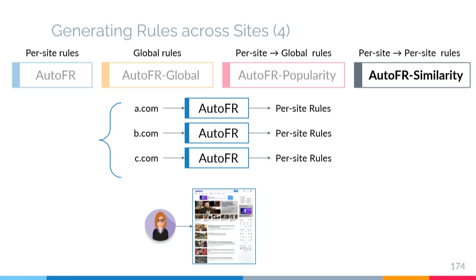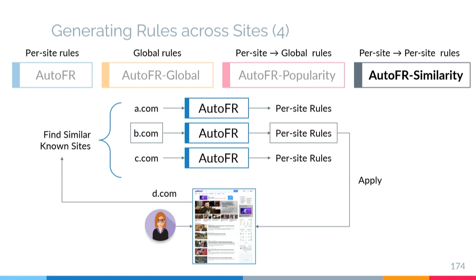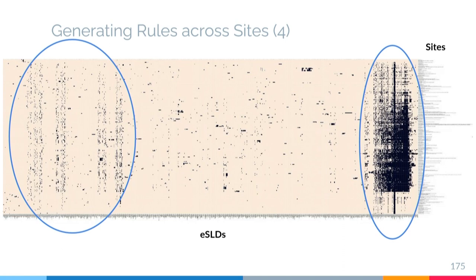However, if the user visits an unknown site, we find the most similar sites to this unseen site using a similarity metric like cosine similarity and apply those rules. The intuition is that when we plot sites and all the unique ESLDs that they contact, we find prevalent popular third-party domains, and sites that contact the same ESLDs will share the same way of serving ads and thus share the same effective filter rules.